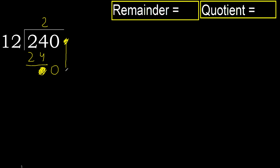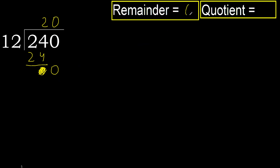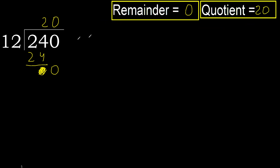That is not a number, therefore finish it. Therefore complete. Always complete with 0 — complete because here we finish it with this number. Okay. 240 divided by 12 is 20.